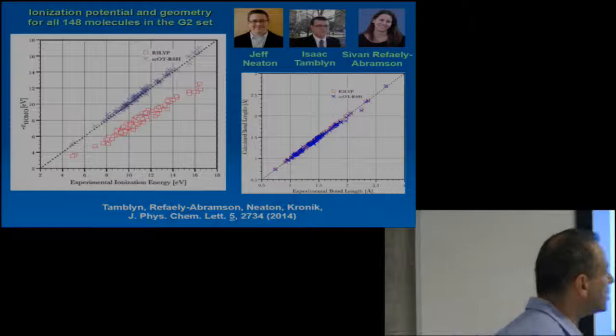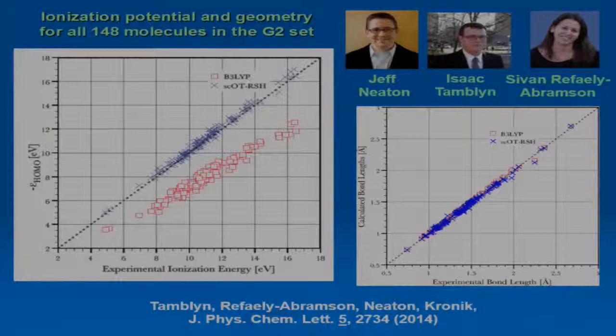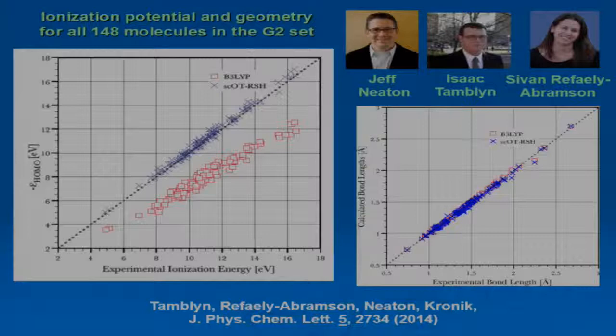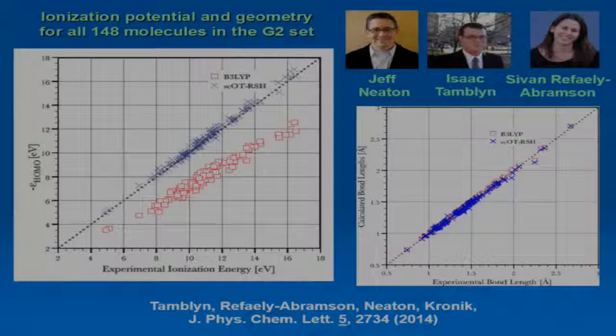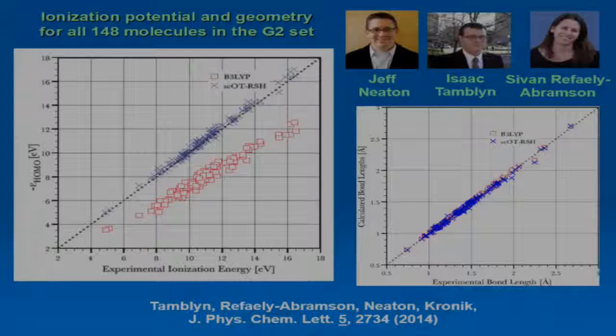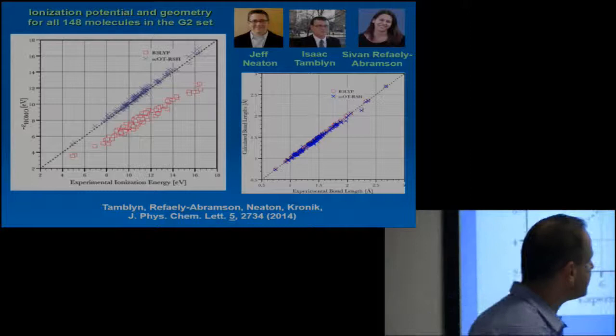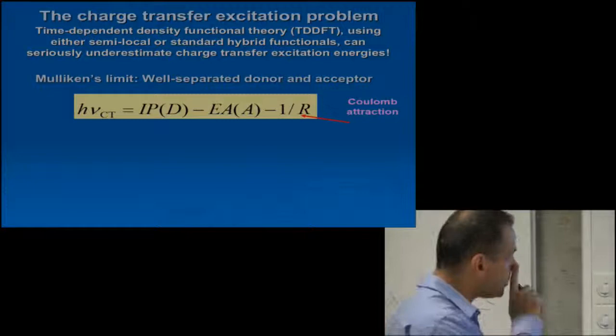That's one molecule. Let me show you a somewhat more comprehensive set. This is work done in collaboration with Jeff Neaton at UC Berkeley. We went over all 148 molecules in the G2 set, which is actually the original set of molecules used to fit B3LYP. This is minus epsilon HOMO versus the experimental ionization energy. You see that despite giving B3LYP the home field advantage, it's still not doing very well. It's not obeying the ionization potential theorem consistently. Whereas our approach is doing much, much better. The second graph just shows that this does not come at the cost of calculating bond lengths.